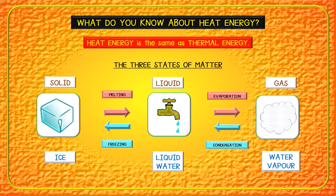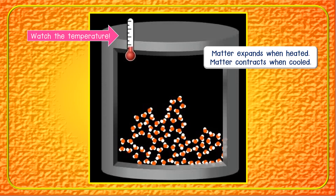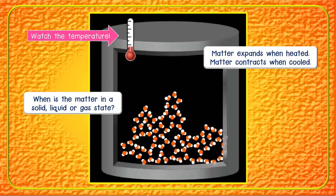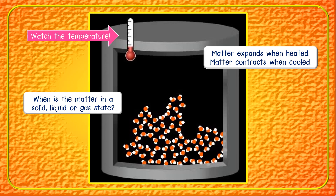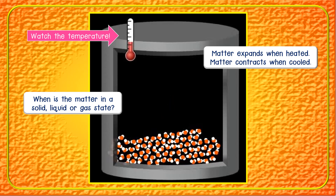When a gas is cooled, condensation takes place and the gas becomes a liquid. When a liquid is cooled, freezing takes place and the liquid becomes a solid. You also know that the molecules of matter change when heated and cooled. You can see this in this animation. Can you tell when the matter is a solid, liquid, or gas?